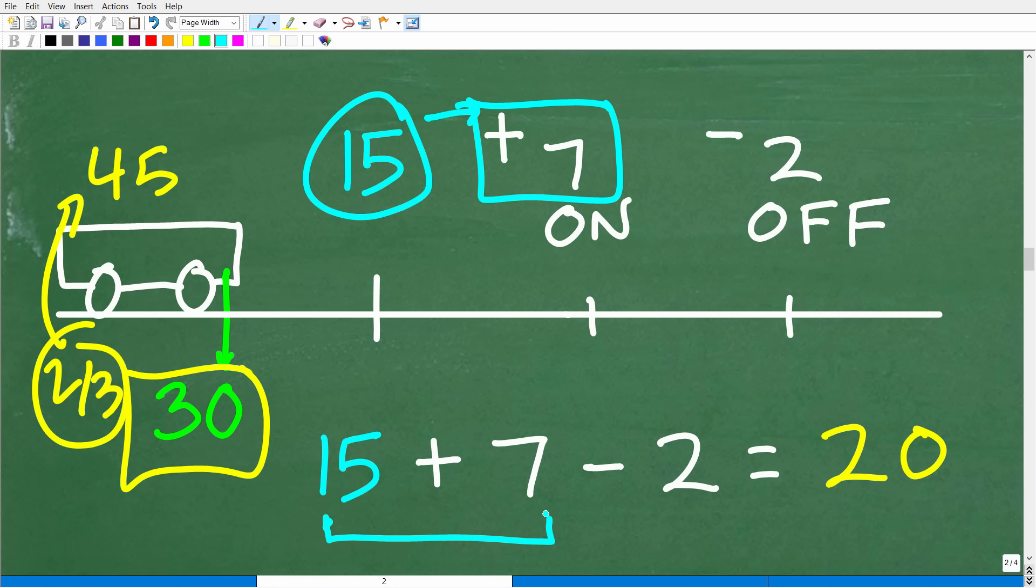But then two people are going to leave. So we can just subtract two from this group right here. So 15 plus seven minus two. And if we do our arithmetic correct, we get 20.